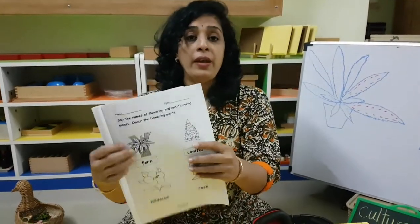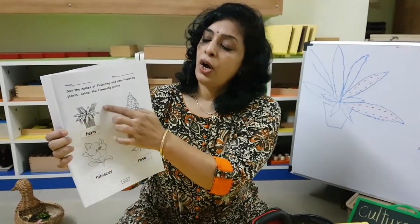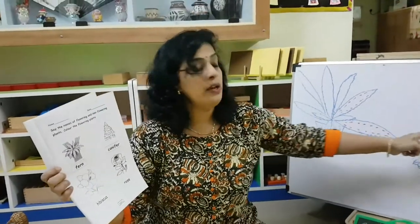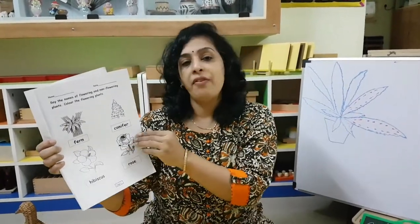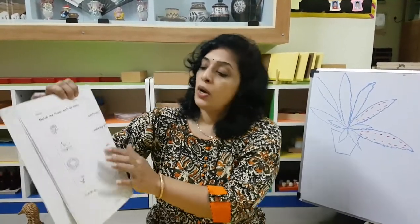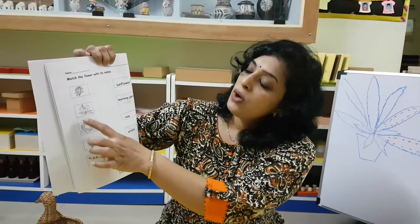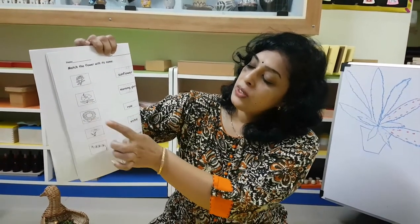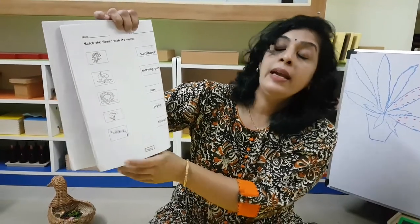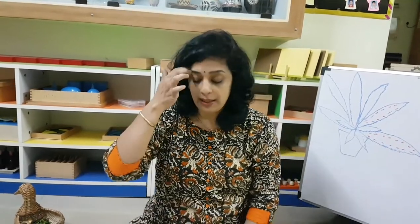So this is how non-flowering plants grow — without flowers. They are called non-flowering: ferns and conifers. Then we have flowering plants which we saw so many of — sunflower, hibiscus, rose, morning glory, orchids, and many others like dahlia, chrysanthemum, jasmine. So many flowers are there in the garden.